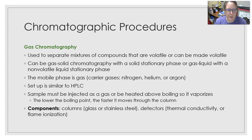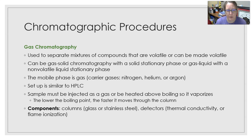Gas chromatography is used to separate mixtures of compounds that are volatile or can be made volatile. It can be gas-solid chromatography with a solid stationary phase or gas-liquid with a non-volatile liquid stationary phase. The mobile phase is a carrier gas — nitrogen, helium, or argon. The setup is similar to HPLC. The sample must be injected as a gas or heated above boiling to vaporize; the lower the boiling point, the faster it moves through the column. Column materials can be glass or stainless steel, and detectors can be thermal conductivity or flame ionization.